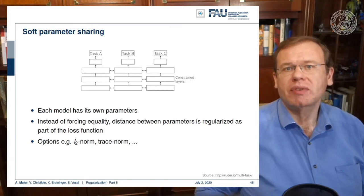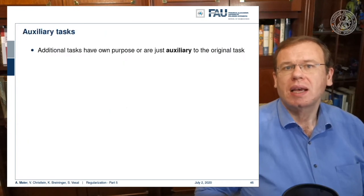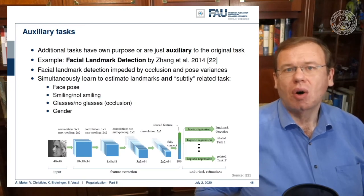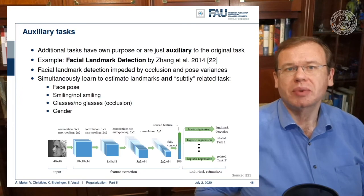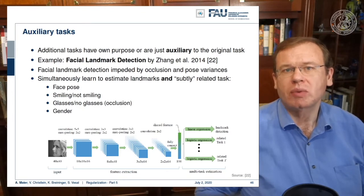In the constraint layers you can enforce similarity using an L2 norm or other norms. We still need to talk about auxiliary tasks. All of these tasks should have their own purpose, but you may also include auxiliary tasks just because you want to create a more stable network.